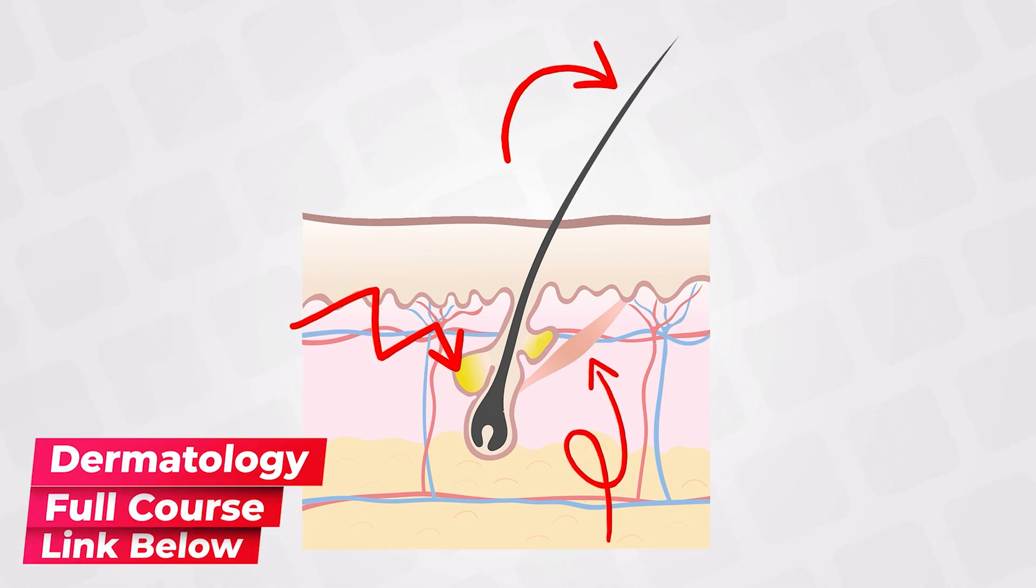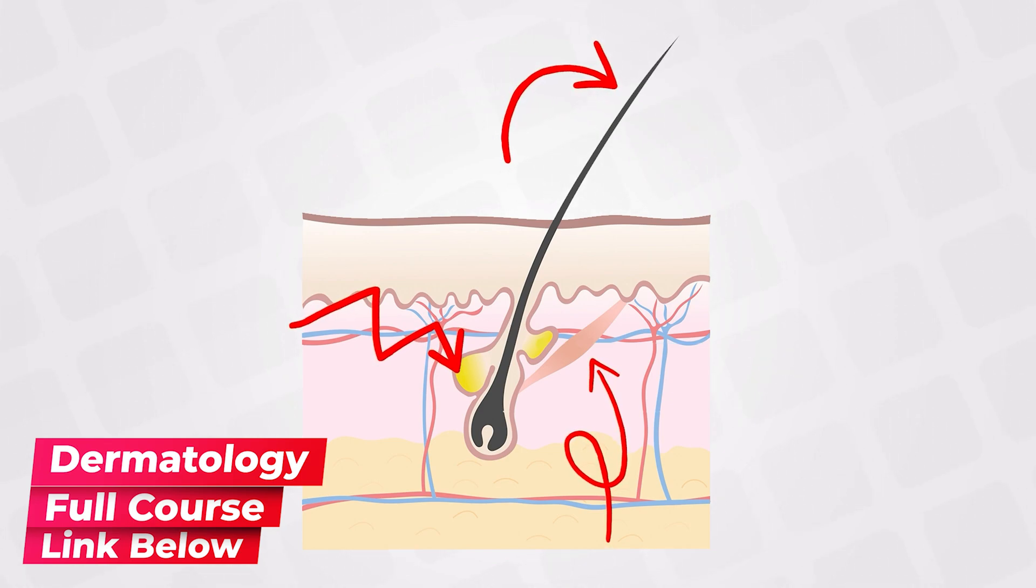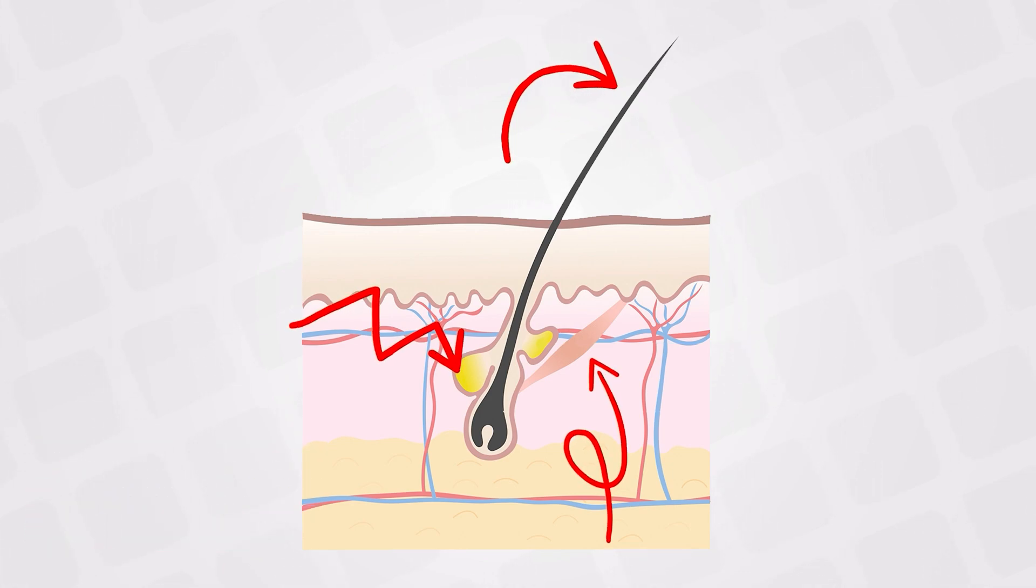The muscle is involved in erecting the hair, and this happens when we feel goosebumps. The sebaceous gland works by maintaining an oily and moisturized hair. So that's the pilosebaceous unit.